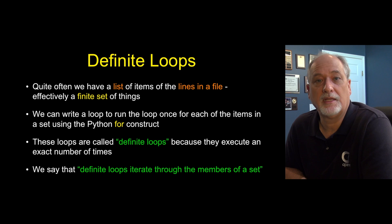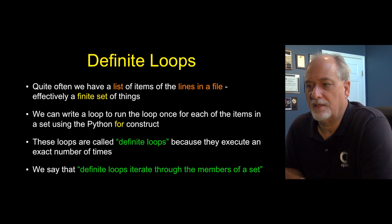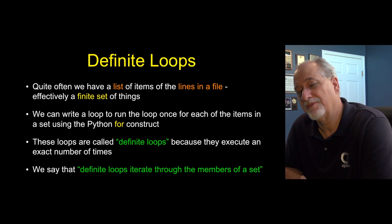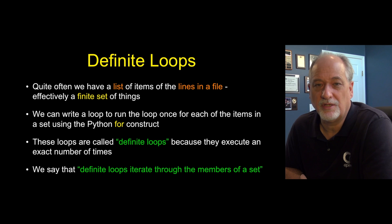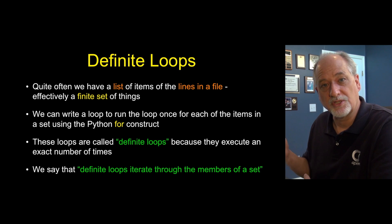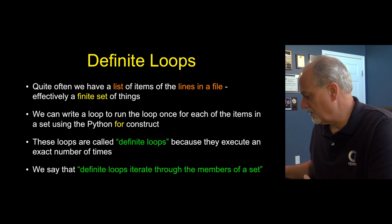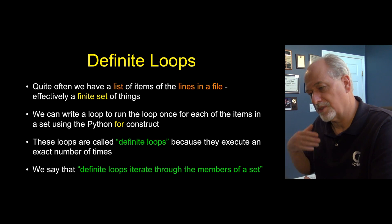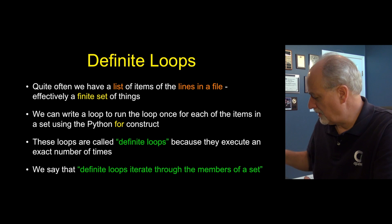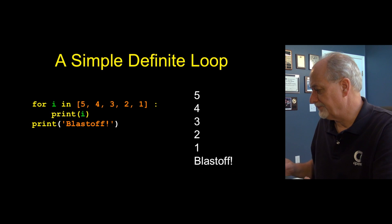And we like this. It's an easier way to construct it, and we actually don't have to deal with the iteration variable manually. The for loop includes a mechanism to construct the iteration variable for us. So definite loops iterate through the members of a set.